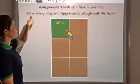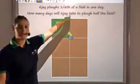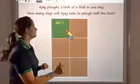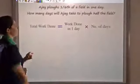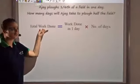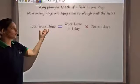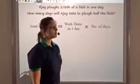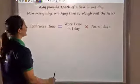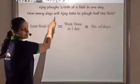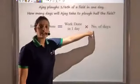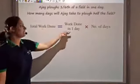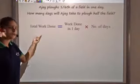Now what I need to find is how many days will he take to plow half the field? Applying the basic formula: total work done is work done in one day multiplied by number of days. I need to find the number of days, so I will use: number of days equals total work done divided by work done in one day.